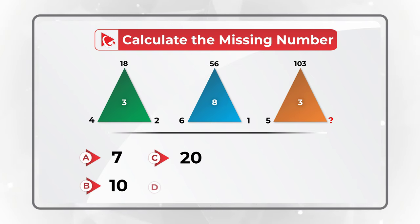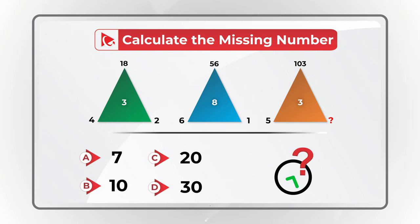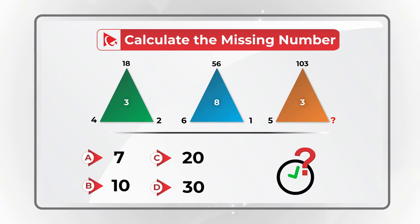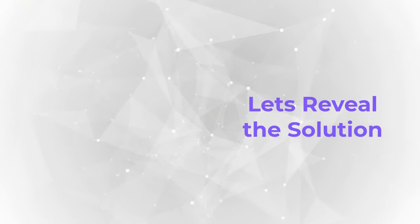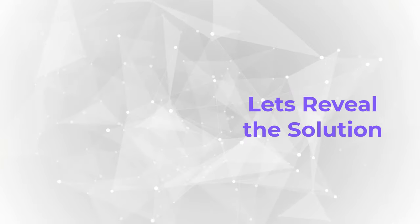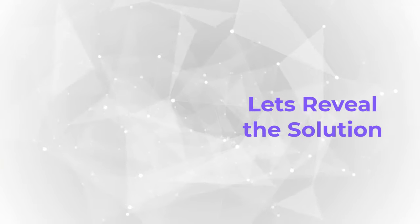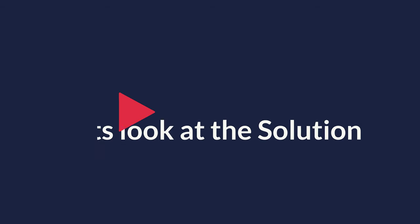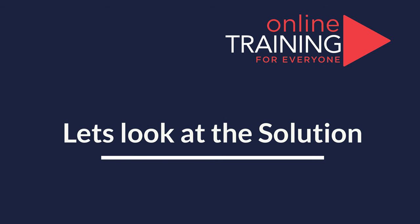You need to calculate the missing number from four choices: A) 7, B) 10, C) 20, or D) 30. Give yourself a moment — try to get to the answer on your own before I reveal the solution.